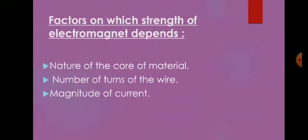There are three factors on which the strength of an electromagnet depends. Number one, the nature of the core material — iron is the best material to make an electromagnet. Number two, the number of turns of the copper wire — more turns means more electromagnetism, fewer turns means less. Number three, the magnitude of the current — greater the current, stronger the electromagnetism; smaller the current, weaker the electromagnetism.